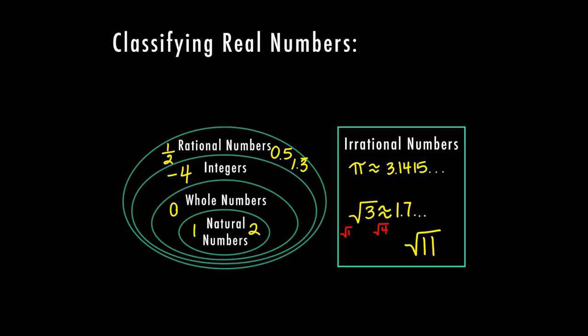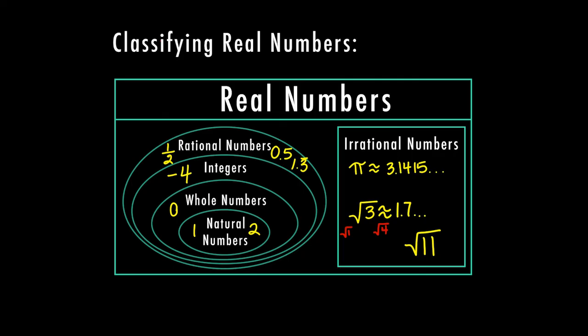So now we have our rational numbers and our irrational numbers. We can have a set of numbers that are considered rational, and a set of numbers that are considered irrational. All of these numbers fall under the real numbers category. Therefore, irrational numbers are a subset of real numbers, and rational numbers are a subset of real numbers. Integers would be considered a subset of rational numbers. So you have your set of real numbers, which includes all numbers, and then you have your subsets.